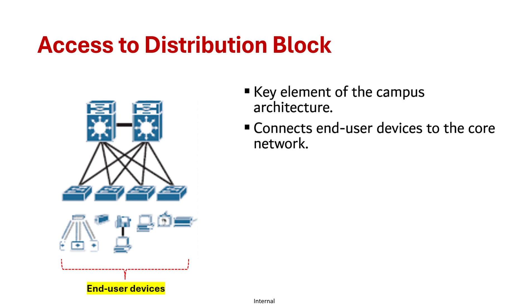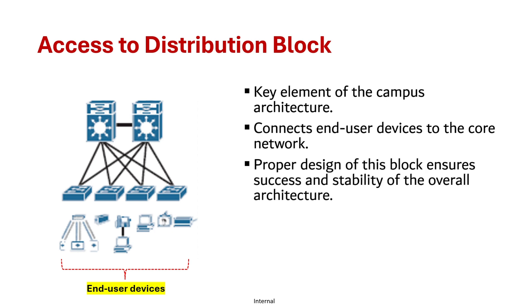The access layer is typically where engineers spend most of their time because it's where everything plugs in — your PCs, your phones, your wireless access points, printers, etc. So properly designing the distribution block goes a long way to ensure the success and stability of your overall architecture.